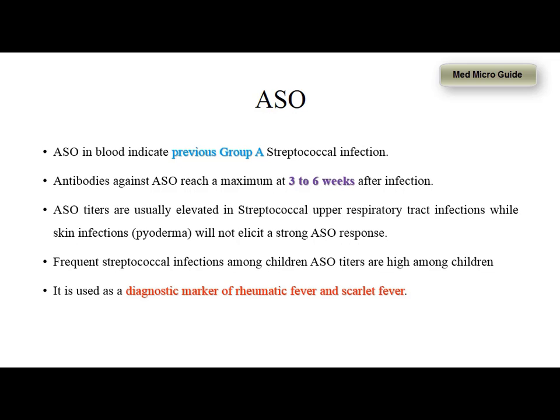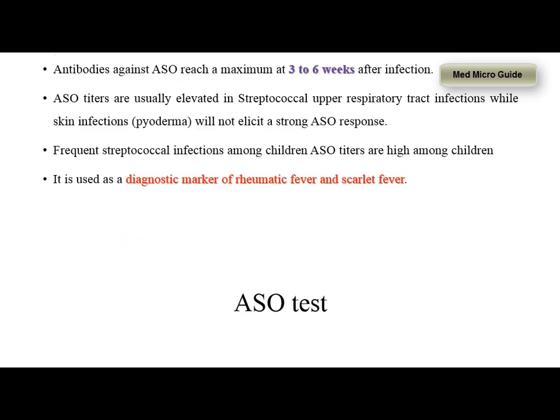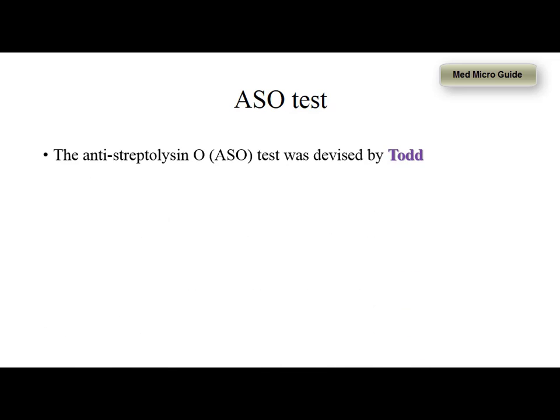The demonstration of anti-streptolysin O in the blood is used as a diagnostic marker for rheumatic fever and scarlet fever. ASO test is widely used in clinical practice to diagnose antecedent streptococcal infections. The test was first devised by Todd, and hence we express the ASO titers in Todd units.